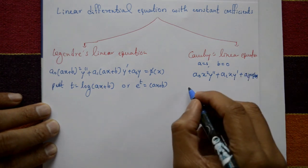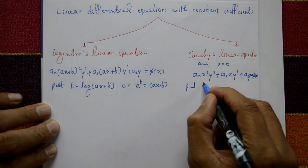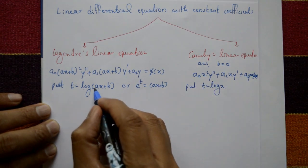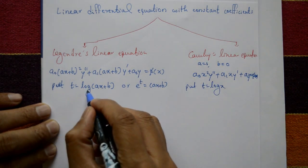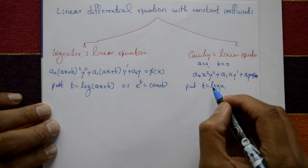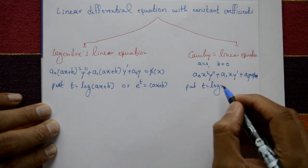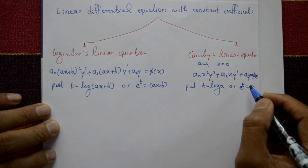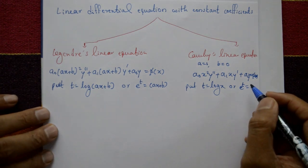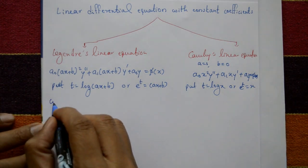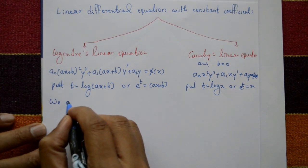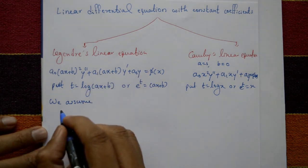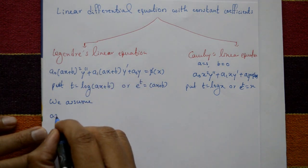In Cauchy's equation, you put t equal to log x only, whereas in Legendre's equation t is equal to log(ax + b). For Cauchy's, the substitution is simply t equal to log x, or equivalently e raised to t equals x. Now we state the assumed results for Legendre's equation.